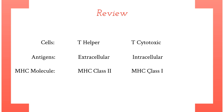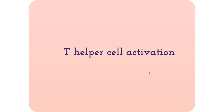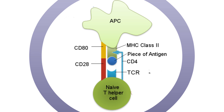Now let's put it all together and discuss T helper cell activation. T helper cells are used for extracellular antigens. To be activated, they must interact with an antigen-presenting cell presenting antigen pieces with an MHC class 2 molecule. The helper T cell uses its TCR and the CD4 marker to recognize the antigen and MHC on the APC.